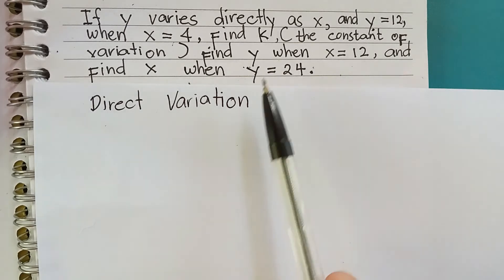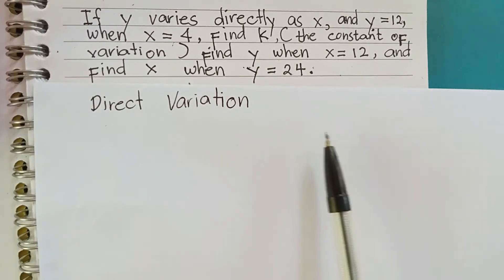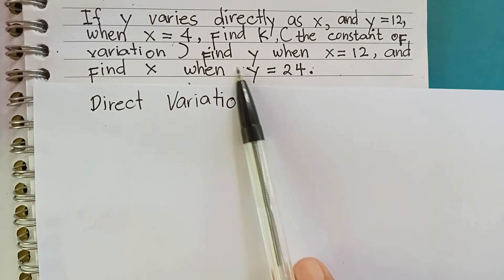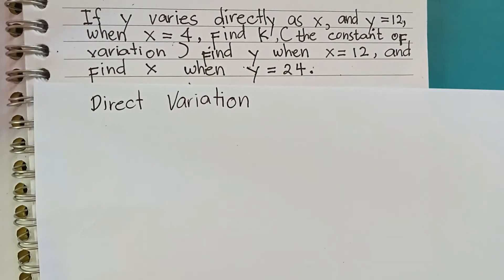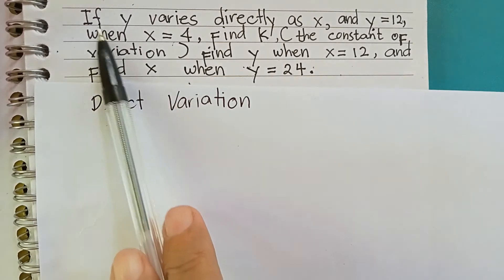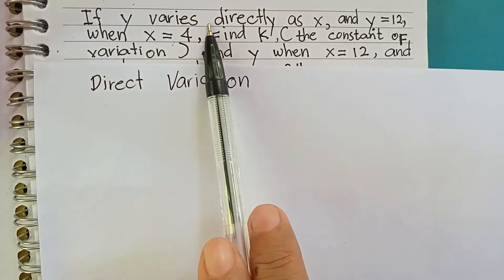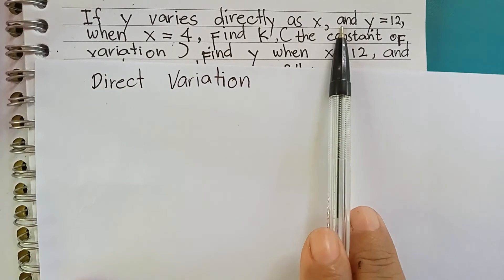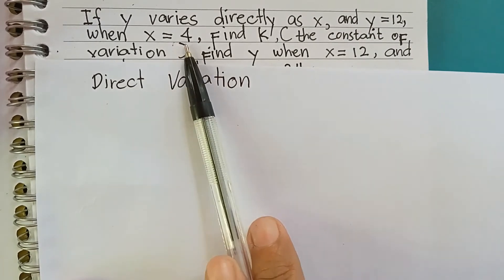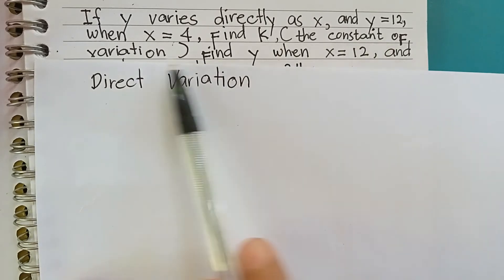Now, tulog ka buok ang ipangita diri ah, the constant of variation or k, y, and x. Let's start from the first part of the problem. If y varies directly as x, and y equals 12 when x equals 4, find k, the constant of variation.